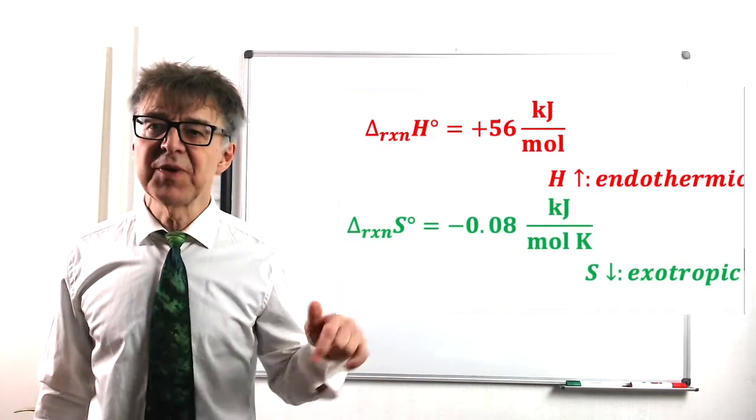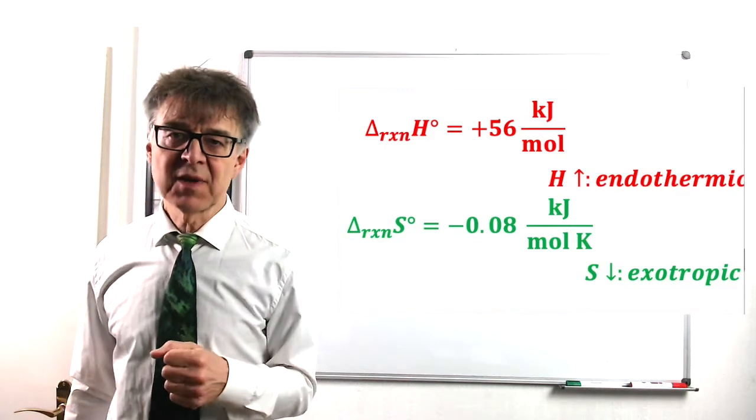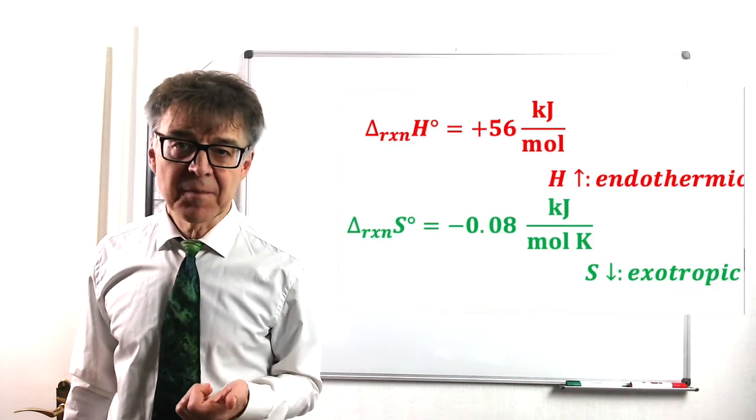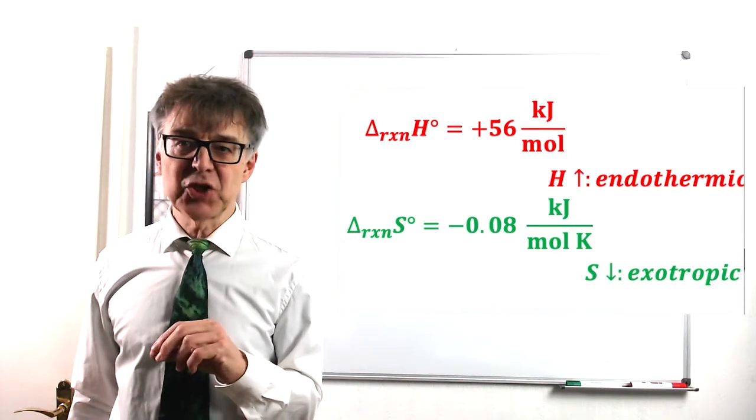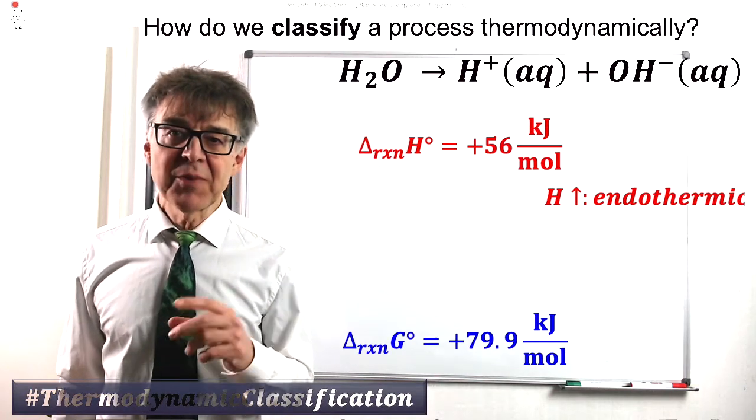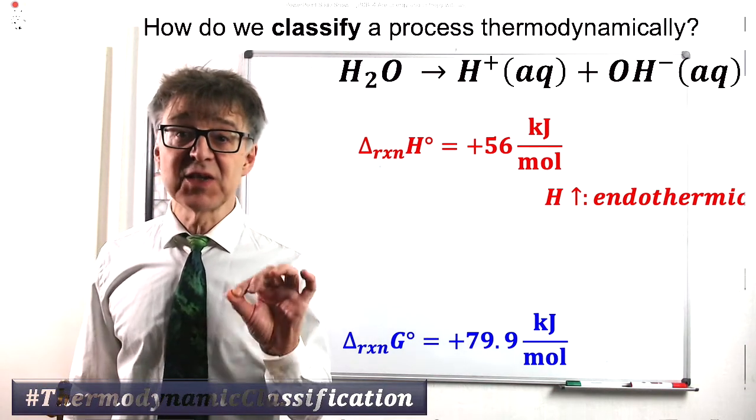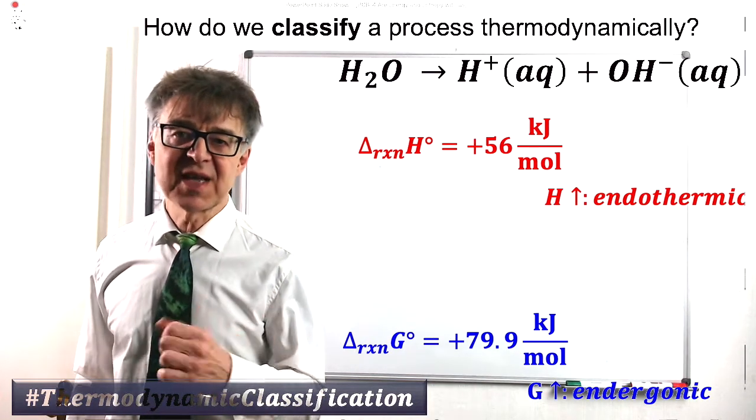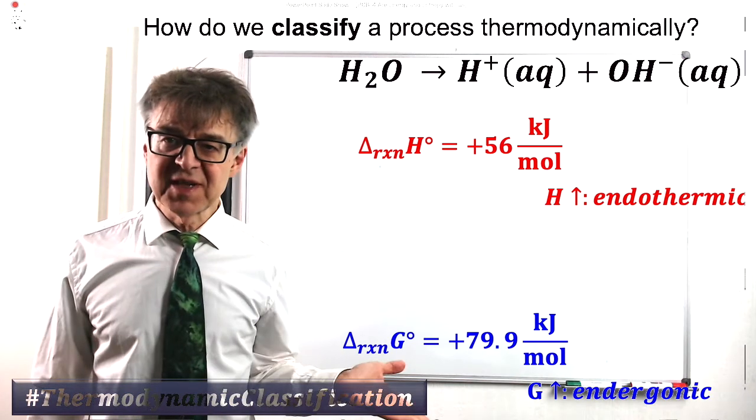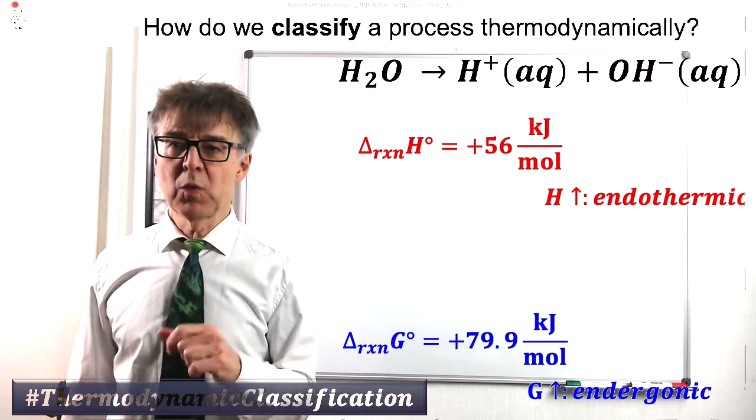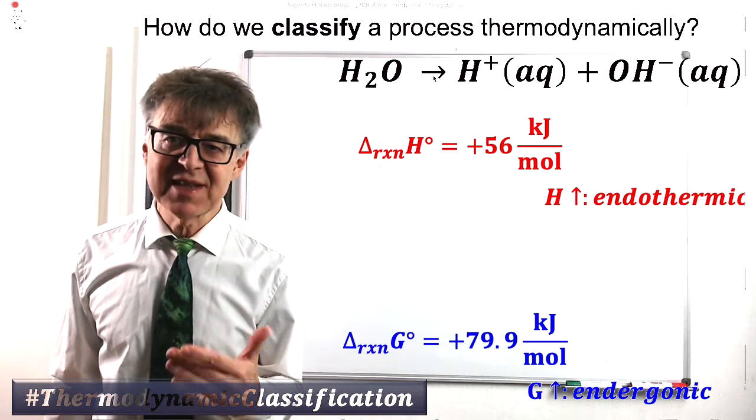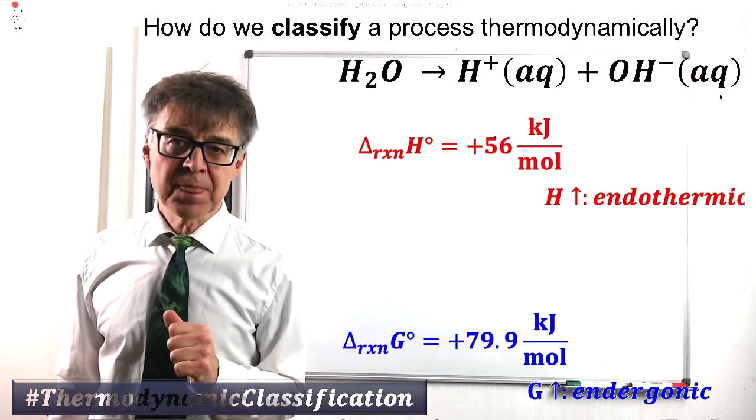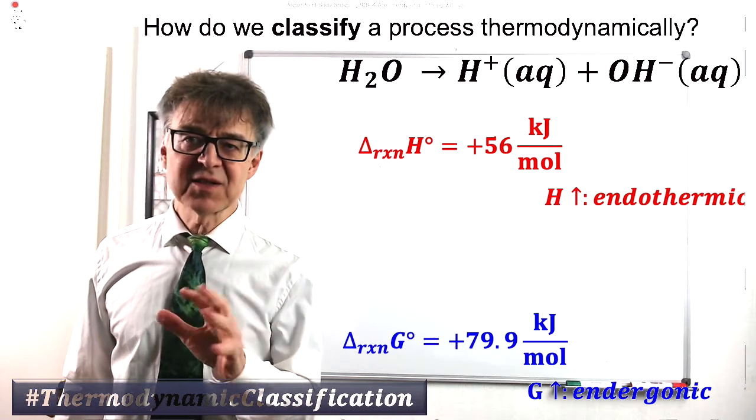With autoprotolysis, the entropy decreases. That is, the process is exotropic, entropy is not with us either. And if we combine energy and entropy using Gibbs-Helmholtz equation, we come to the conclusion that instability during the process increases, which means the products are more unstable than the reactants. The process as a whole is endogenic. Water will never spontaneously decompose completely into H plus and OH minus.